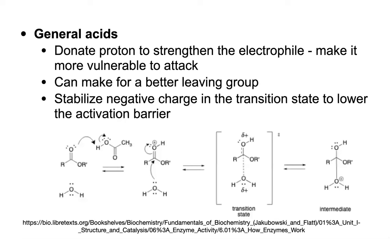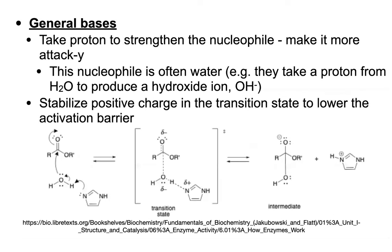General acids donate protons. We wouldn't want to donate a proton to our nucleophile — that would weaken it — but we do want to donate a proton to our electrophile, which strengthens it. Even with a weaker nucleophile like water, if we've protonated the electrophile — for example, protonating a carbonyl group — the oxygen hoards even more electrons from the carbonyl carbon, making it even more partially positive and more vulnerable to attack by water. This helps catalyze the reaction. General acids can also help make better leaving groups by protonating them, and stabilize negative charge in the transition state — in both cases lowering the activation barrier.